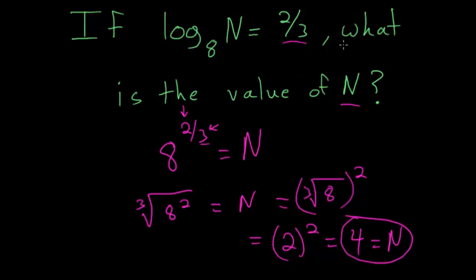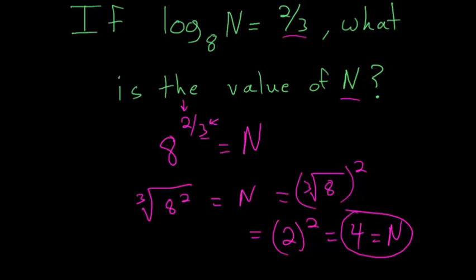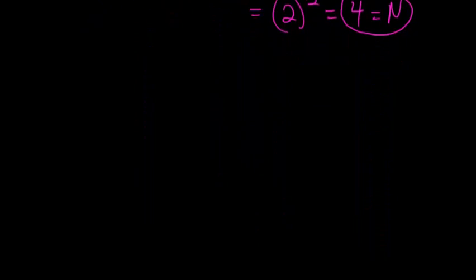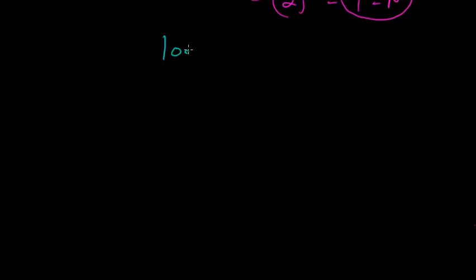And a more algebraic way to look at a problem like this is to exponentiate each side. So again we have log base 8 of n equals 2 thirds. So what we can do is exponentiate each side with a base of 8. So 8 to the log base 8 of n is equal to 8 to the 2 thirds power.